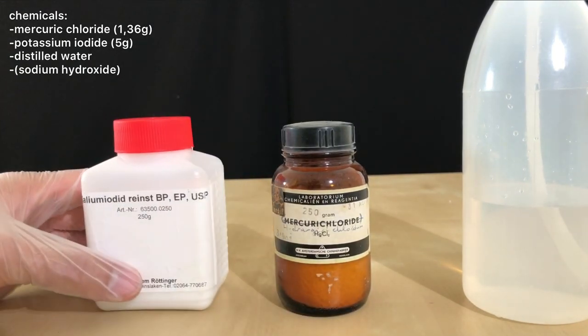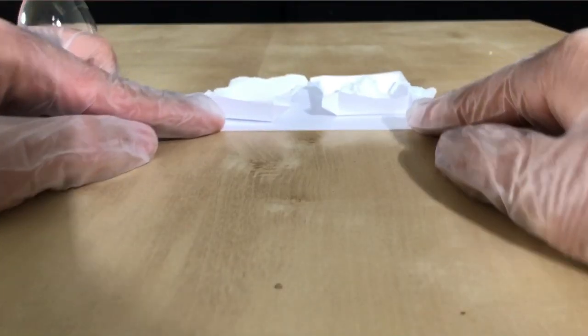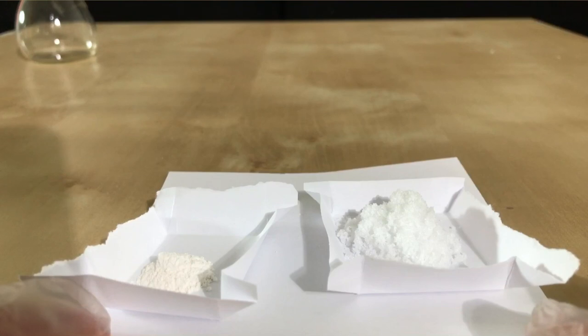Distilled water, 1.36 grams of highly toxic mercuric chloride and 5 grams of potassium iodide will be needed.